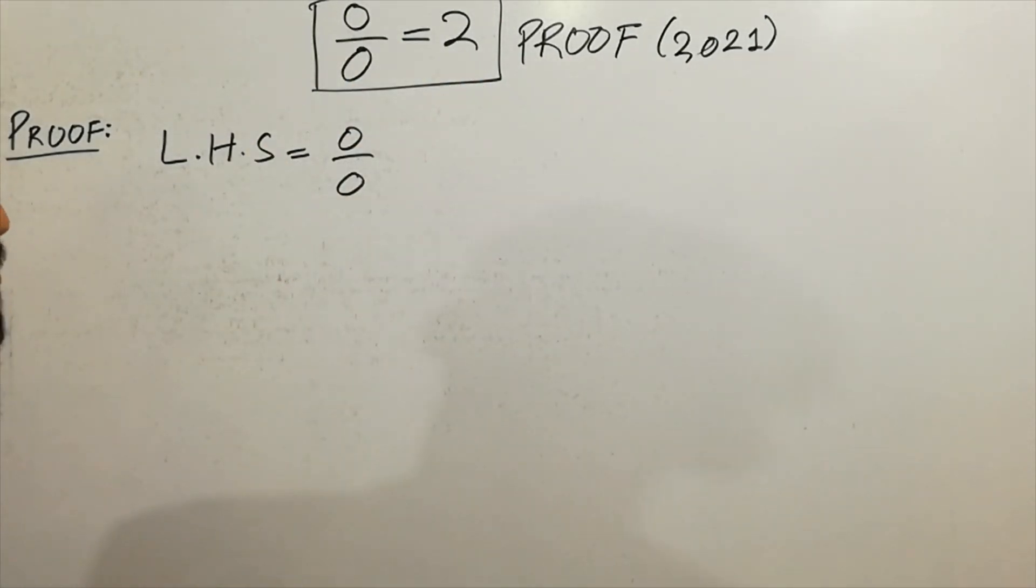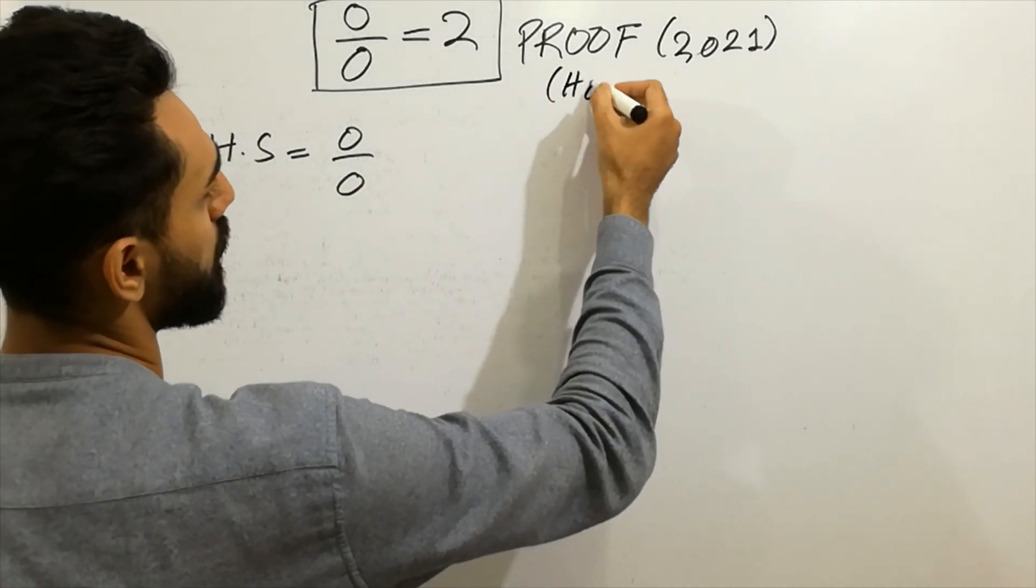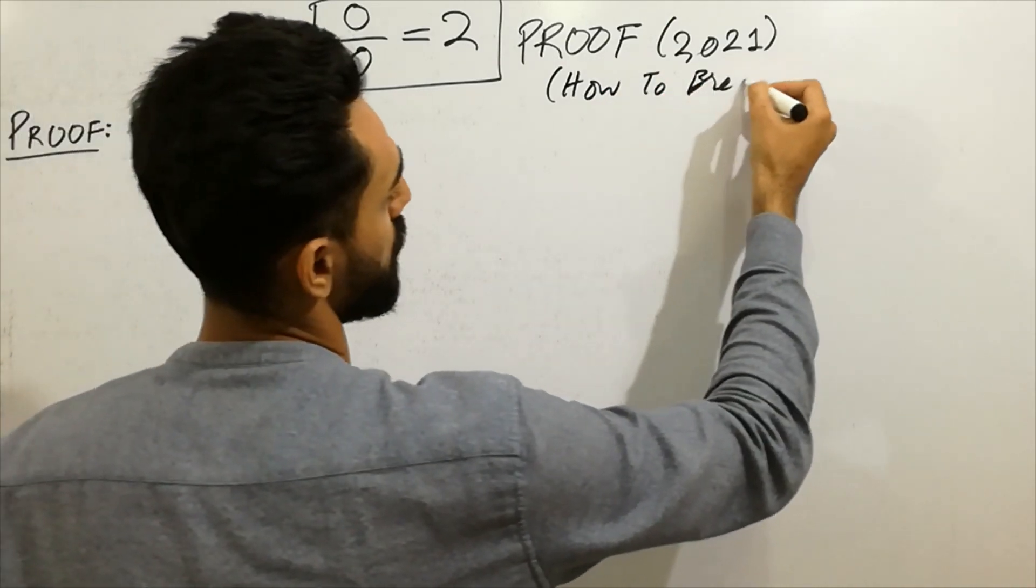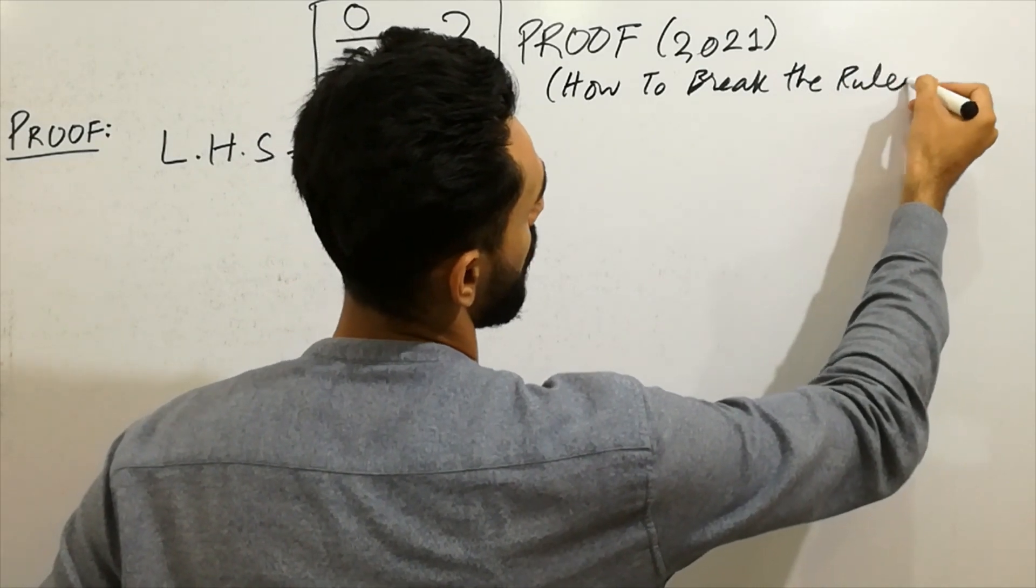Always equal to two. How to break the rules of mathematics? The point is there: how to break the rule of mathematics.